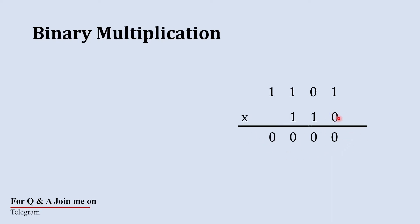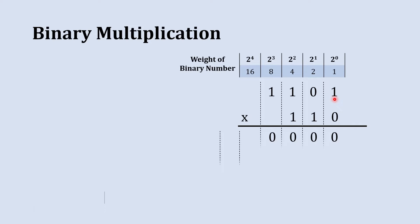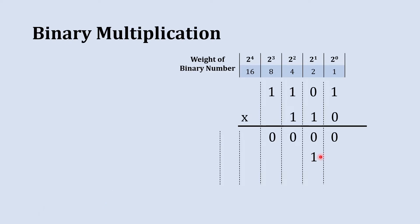After multiplying the LSB of the multiplier with all bits of the multiplicand, it is now time for the next bit, and here the next bit is 1. We will multiply this 1 with all bits of the multiplicand, starting with the least significant bit. When we multiply this 1 with this 1 the answer is 1, and that should be placed in the 2's place, not in the 1's place like we did with the previous number.